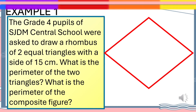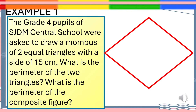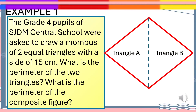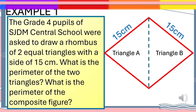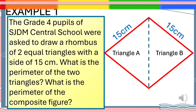Let's read, understand, and analyze this short story problem. The Grade 4 pupils of SJDM Central School were asked to draw a rhombus composed of two equal triangles with a side of 15 cm. What is the perimeter of the two triangles? What is the perimeter of the composite figure? We will use the same method: solve for the perimeter of Triangle A and B, calculate the perimeter of the two triangles, then solve for the perimeter of the composite figure.